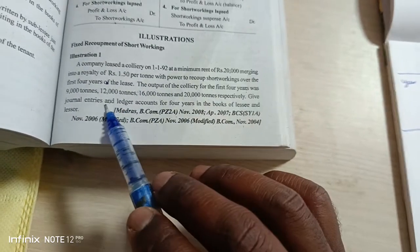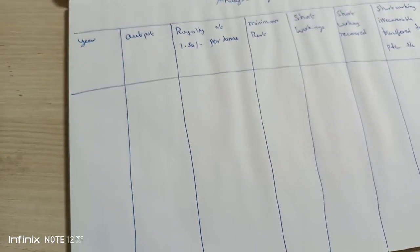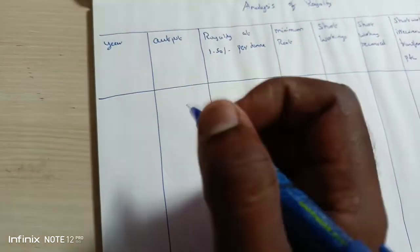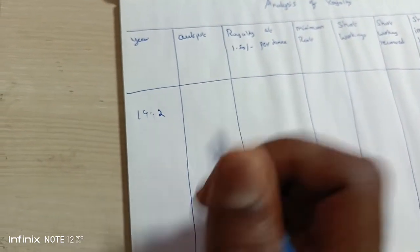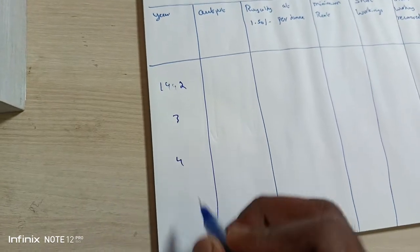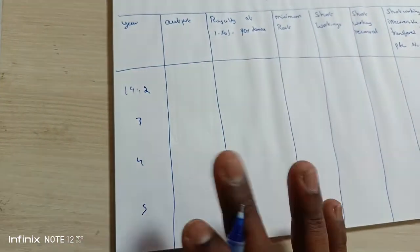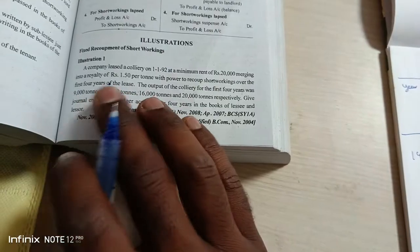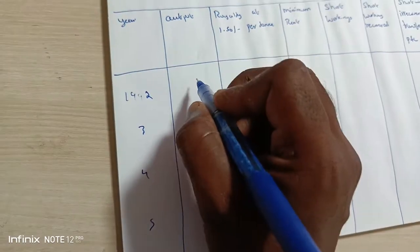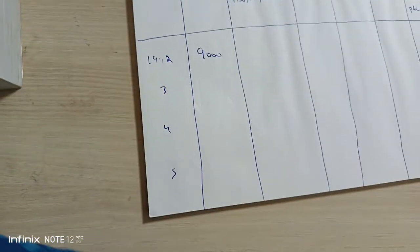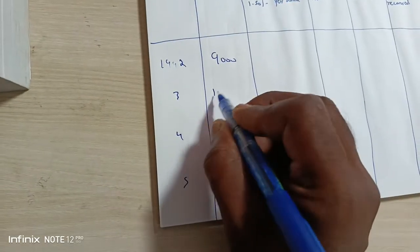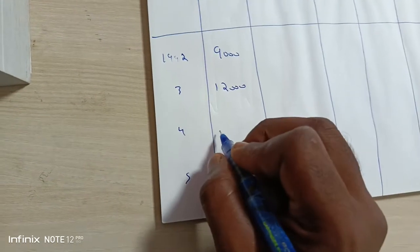We will get 4 years. Starting from 1st January 1992, we have 4 years: 1992, 1993, 1994, and 1995. The output figures for each year are: 9,000 tons, 12,000 tons, 16,000 tons, and 20,000 tons.